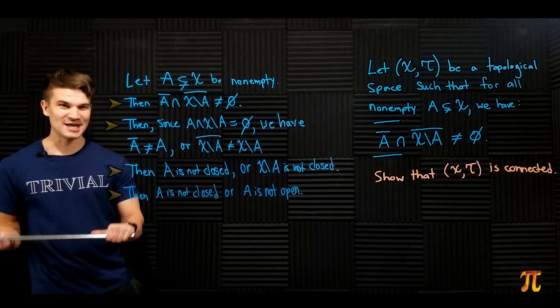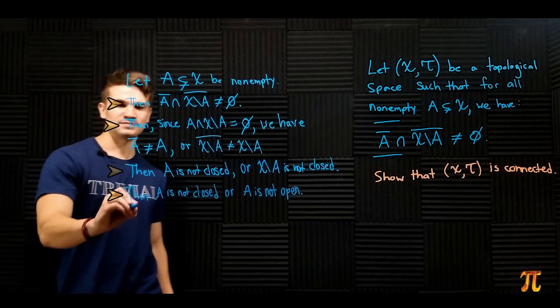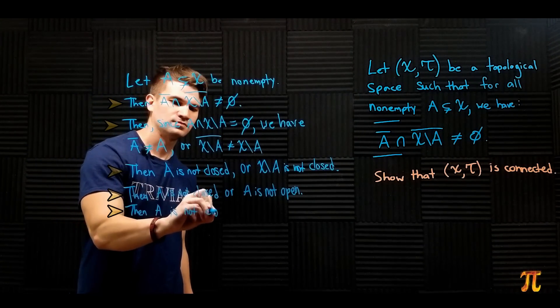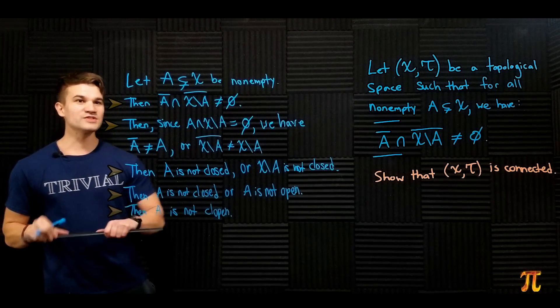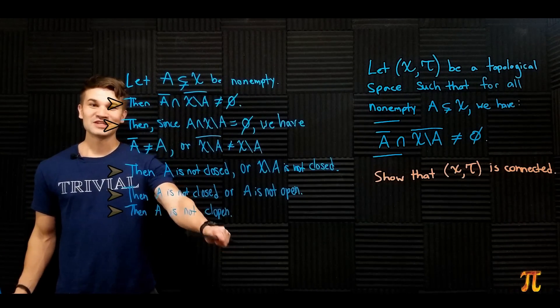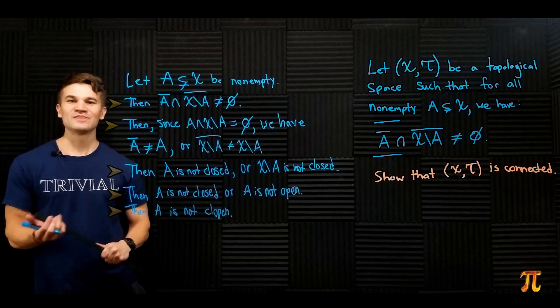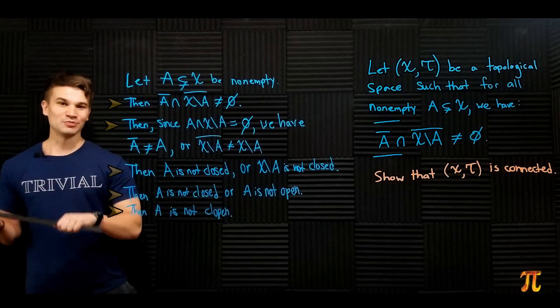Now A was an arbitrary non-empty proper subset of X, and we can conclude that it is not clopen. This is a characterization of connectedness, so the proof is complete.